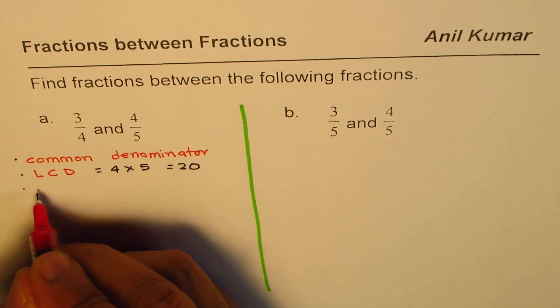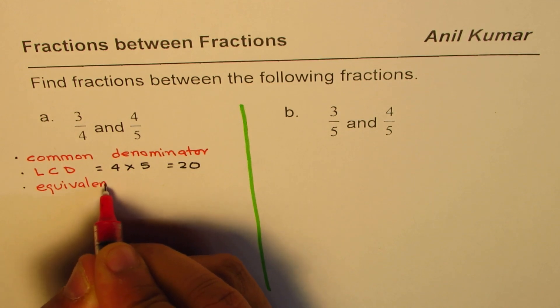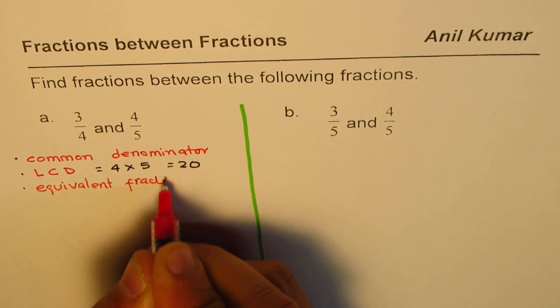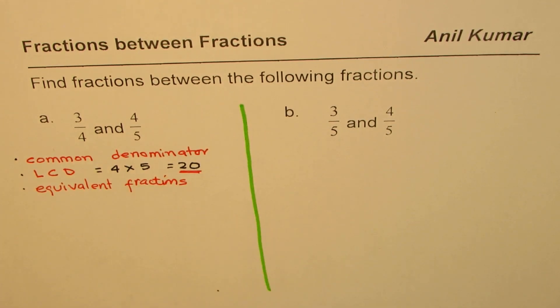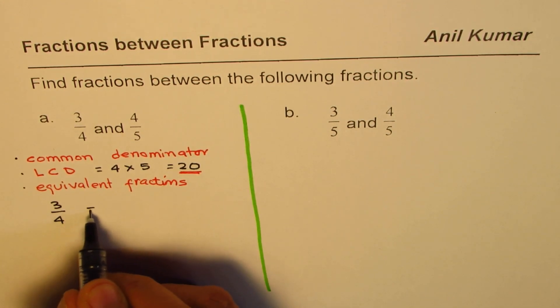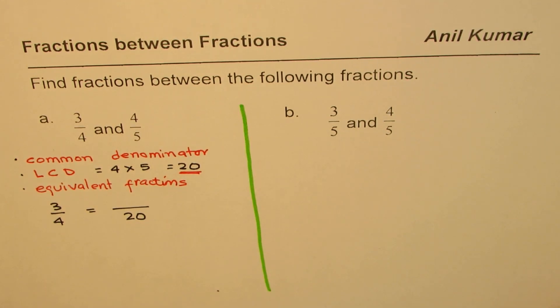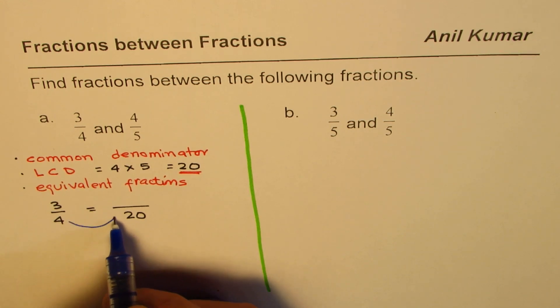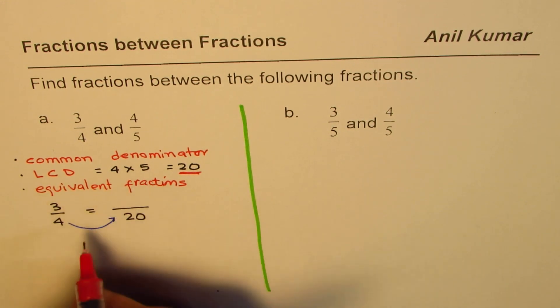Next we have to write them as equivalent fractions with same lowest common denominator. So we have 3 out of 4 and we want to write this with denominator of 20. 4 times what is 20? This is what we have to figure out. So 4 times we know 5 is 20, times 5.